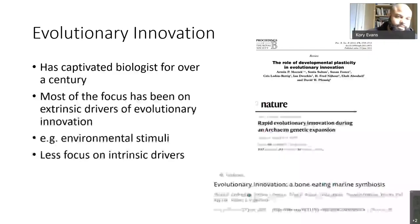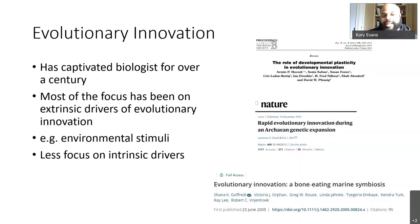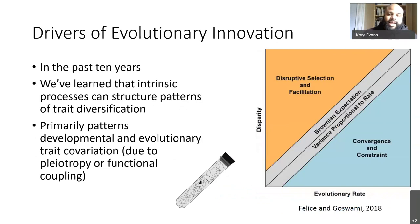Flight is an evolutionary innovation because once an animal gains the ability to fly, it gains access to airspace — we've seen this with birds evolving from terrestrial dinosaurs. Similarly, tube-snouted vertebrates have evolved really long faces so they can stick their faces in places they couldn't reach before. Much of the focus for evolutionary innovation historically has been on extrinsic or environmental drivers, with less focus on intrinsic organismal properties that might facilitate innovation.